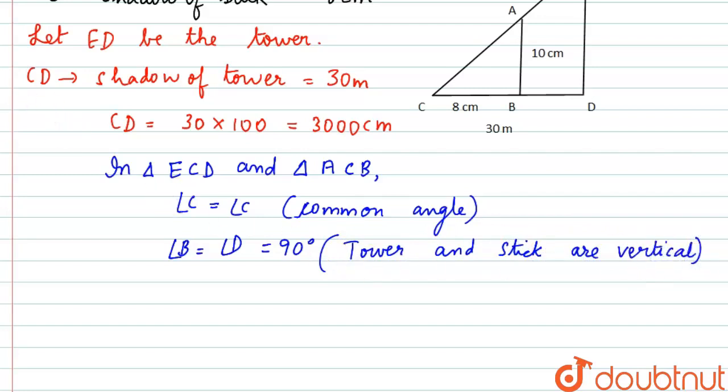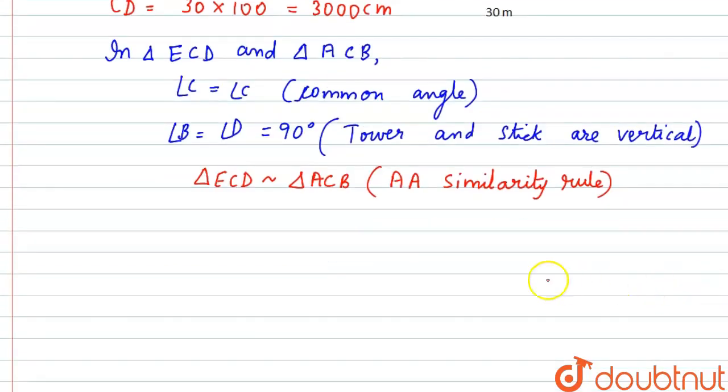Therefore, when two angles are equal, we can see that triangle ECD is similar to triangle ACB and the reason is AA similarity rule. By this rule the triangles are similar.